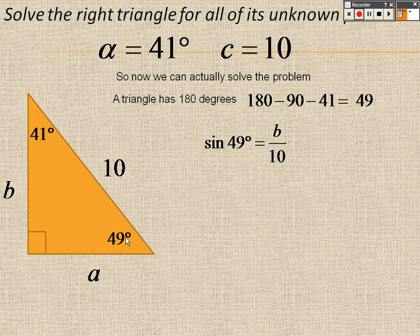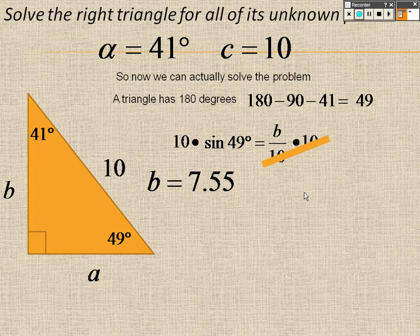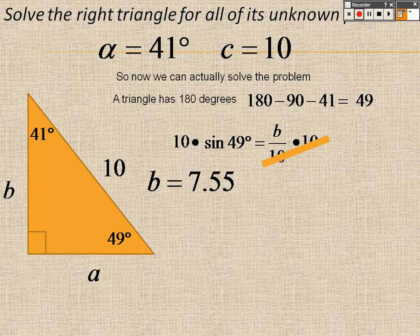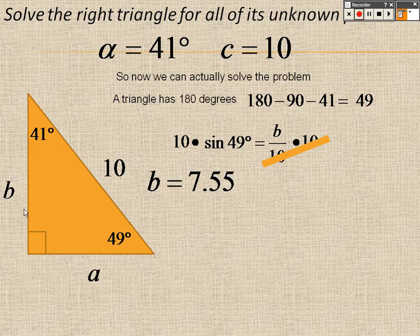I'm going to use sine of 49 degrees. Why? Because it's opposite, which is b, over hypotenuse, which is 10. So I multiply both sides by 10 to get my answer. Could I have used something else? Yes. Could I have used cosine or tangent? Yes. It's just what I decided to use. You're still going to get the same answer, and you need to keep that in mind when you're doing these. So this is 7.55.